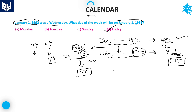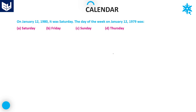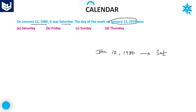You have to be very careful regarding these dates — in which year you are taking February month is a very important point. Next question: On January 12, 1980, it was Saturday. The question asks for the day of the week on January 12, 1979.